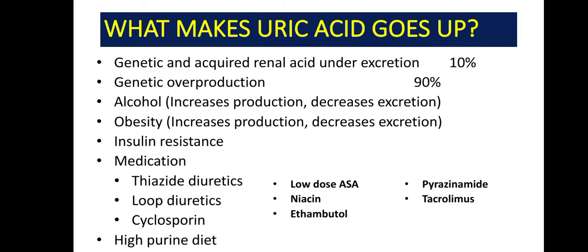Now, what makes uric acid go up? If we broadly categorize the causes that lead to hyperuricemia, we have two categories: the first one is under-excretion and the second one is overproduction. Under-excretion is usually causing 10% of cases and overproduction is usually causing 90% of the causes of hyperuricemia.